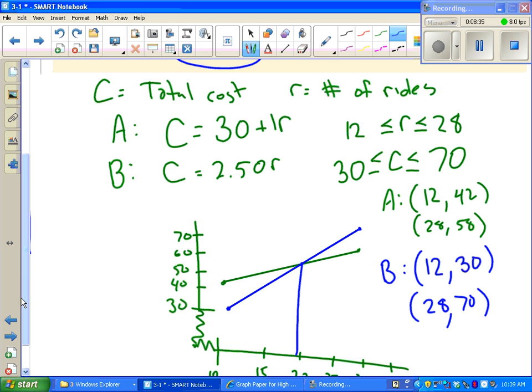If I'm going to take more than 20 rides, the green line looks the best. If I'm going to take exactly 20 rides, it doesn't matter.